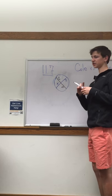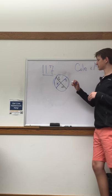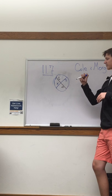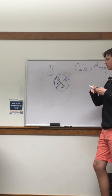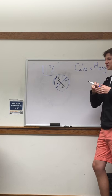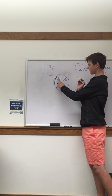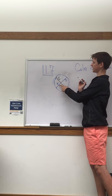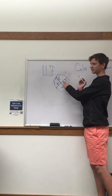Alright, this is learning target 11.7. So we have a circle and two chords in there intersecting. So according to Euclidean geometry, if you times these two and times these two, they equal each other.